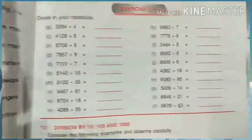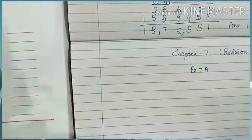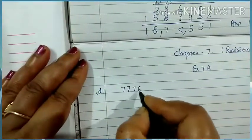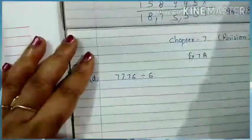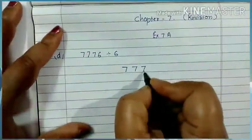Exercise 7a. Let's do question number D. 7776 divided by 6. So what is the basic of division? The basic of division is 7776.